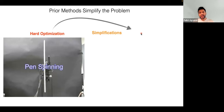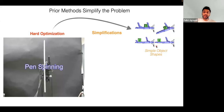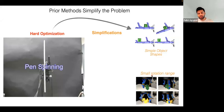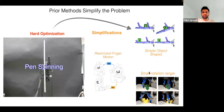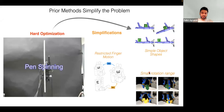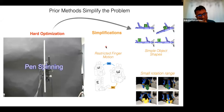To solve this, people make simplifications — for example, only dealing with convex objects, only dealing with small rotations, or restricting finger motion. Within these restrictions optimization becomes easier, but you lose generality. A human needs to come in and make these simplifications on a case-by-case basis, which is why it requires teams of people and large amounts of time to design a controller that works in one scenario but not across all scenarios.